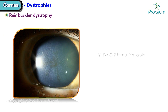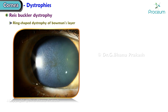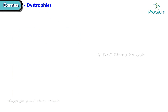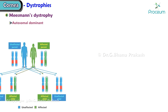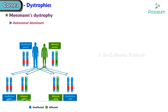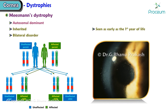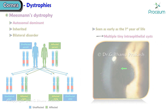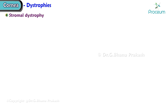Reis-Bückler dystrophy is a ring-shaped dystrophy of Bowman's layer. Meesmann's dystrophy is an autosomal dominant inherited bilateral disorder, usually seen as early as the first year of life, presenting as multiple tiny intraepithelial cysts.